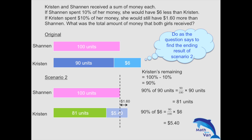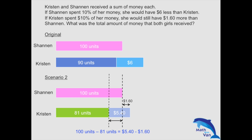The solution is now quite clear. The difference in units is 100 minus 81 units, and in terms of value it is $5.40 minus $1.60. So we can now solve our units: 19 units equals $3.80, meaning 1 unit equals $0.20.